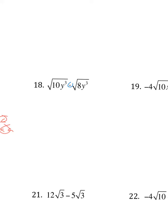18. Multiplication, just multiply. Radical times radical equals radical. 10 times 8 is 80, y to the 6th. Pause it, see if you can break this down and get the same answer as me.